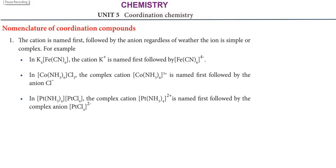Hi students, greetings from Success Education Academy. 12th Chemistry Unit 5, that is the Nomenclature of Coordination Compounds. We will continue to look at the videos for clarity. The first point is the nomenclature: Coordination Compounds follow some rules. The first rule is that the cation is named first and followed by the anion, regardless of whether the ion is simple or complex.